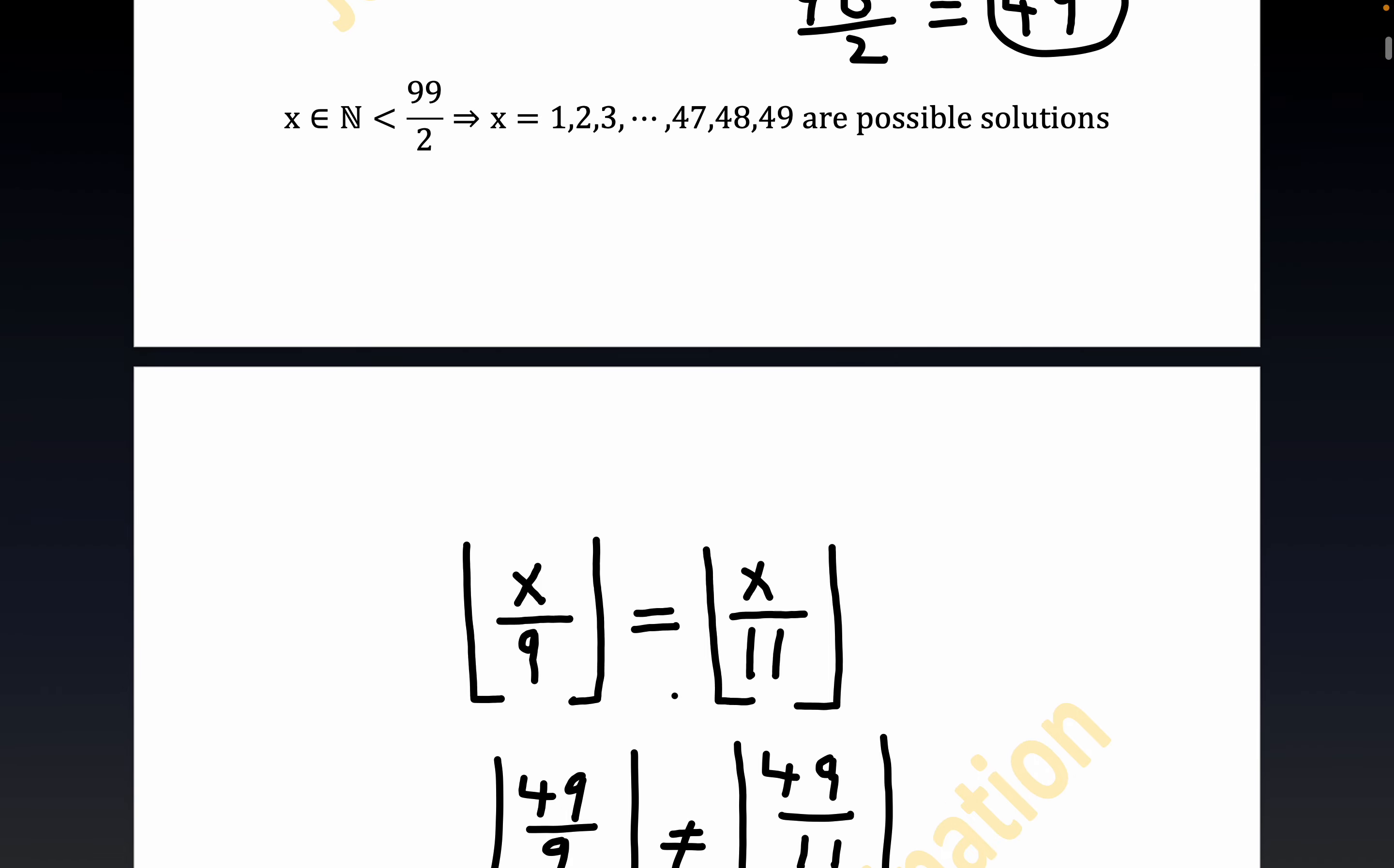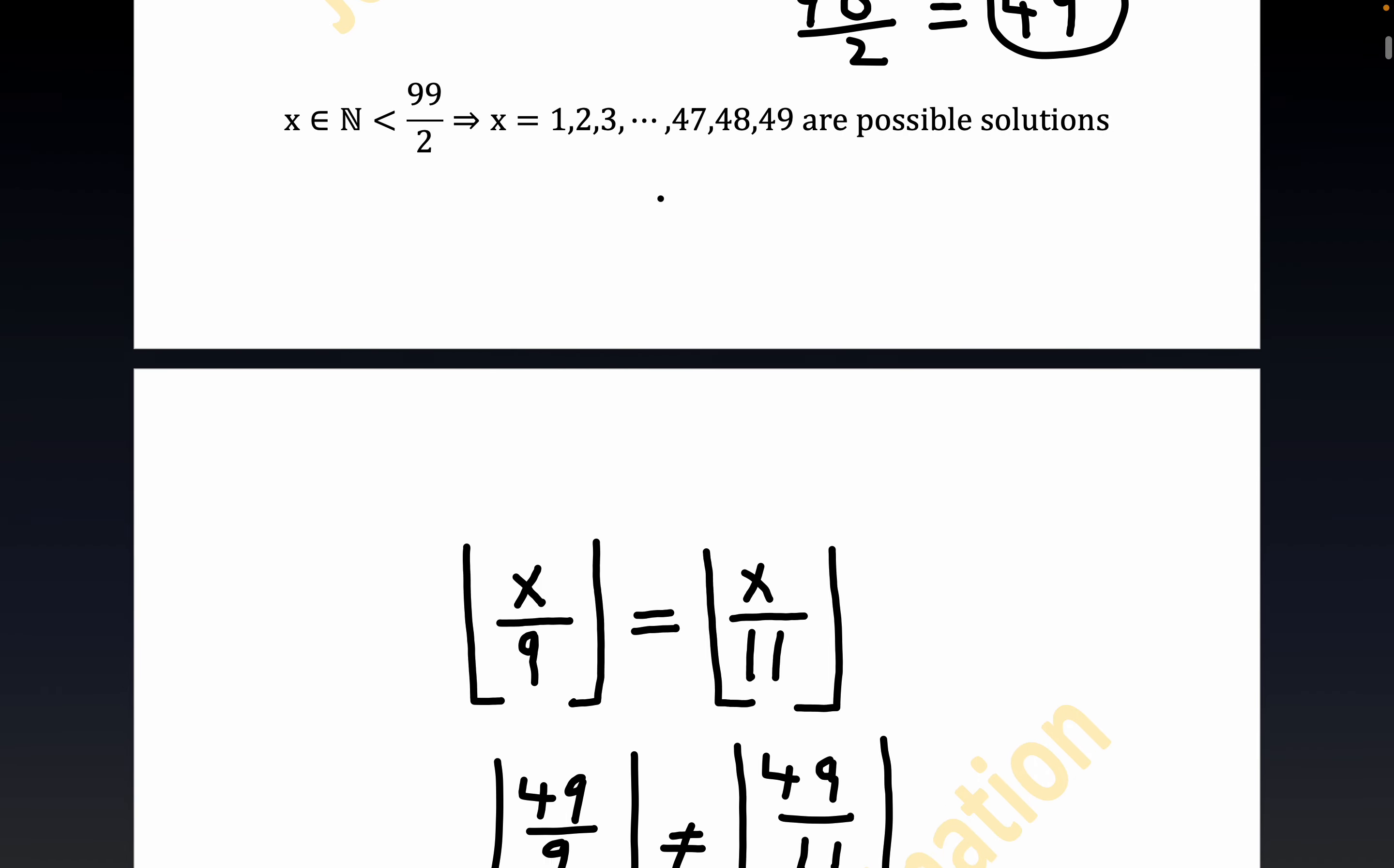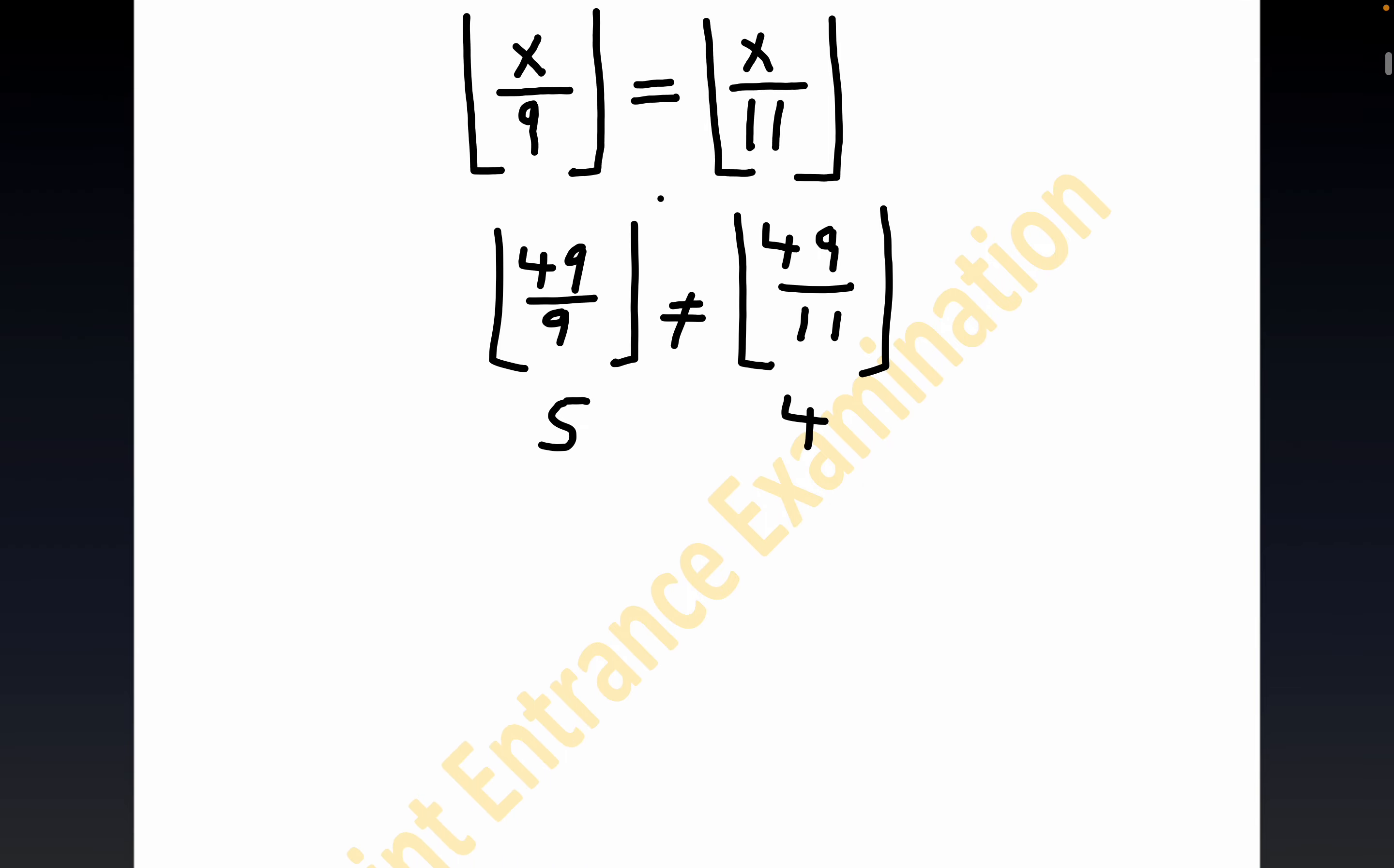Now let's look at another number. Let's try 25. So let's do the floor of 25 over 9, and then the floor of 25 over 11. Again, I just arbitrarily picked a number less than 49, a natural number less than 49.